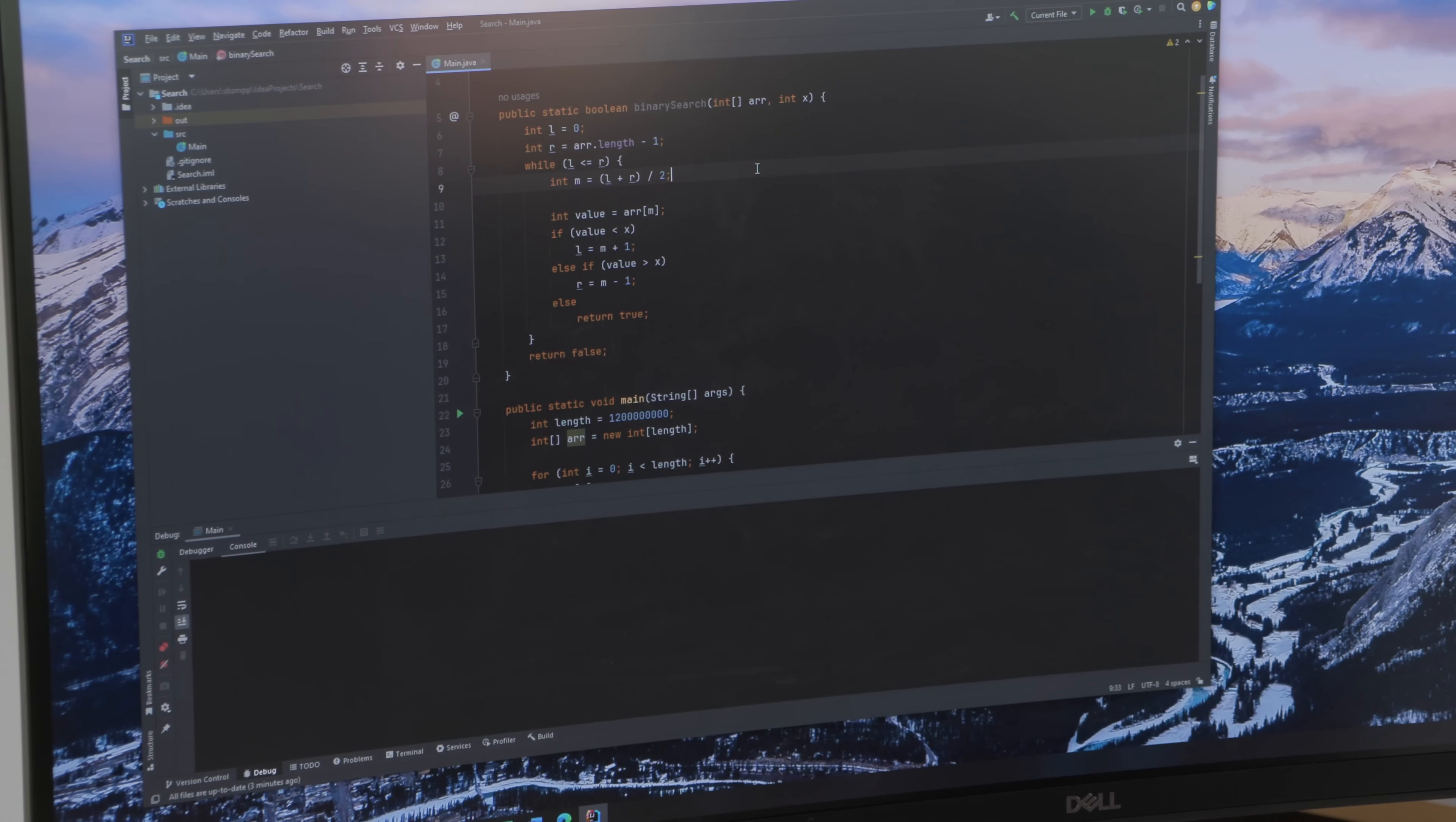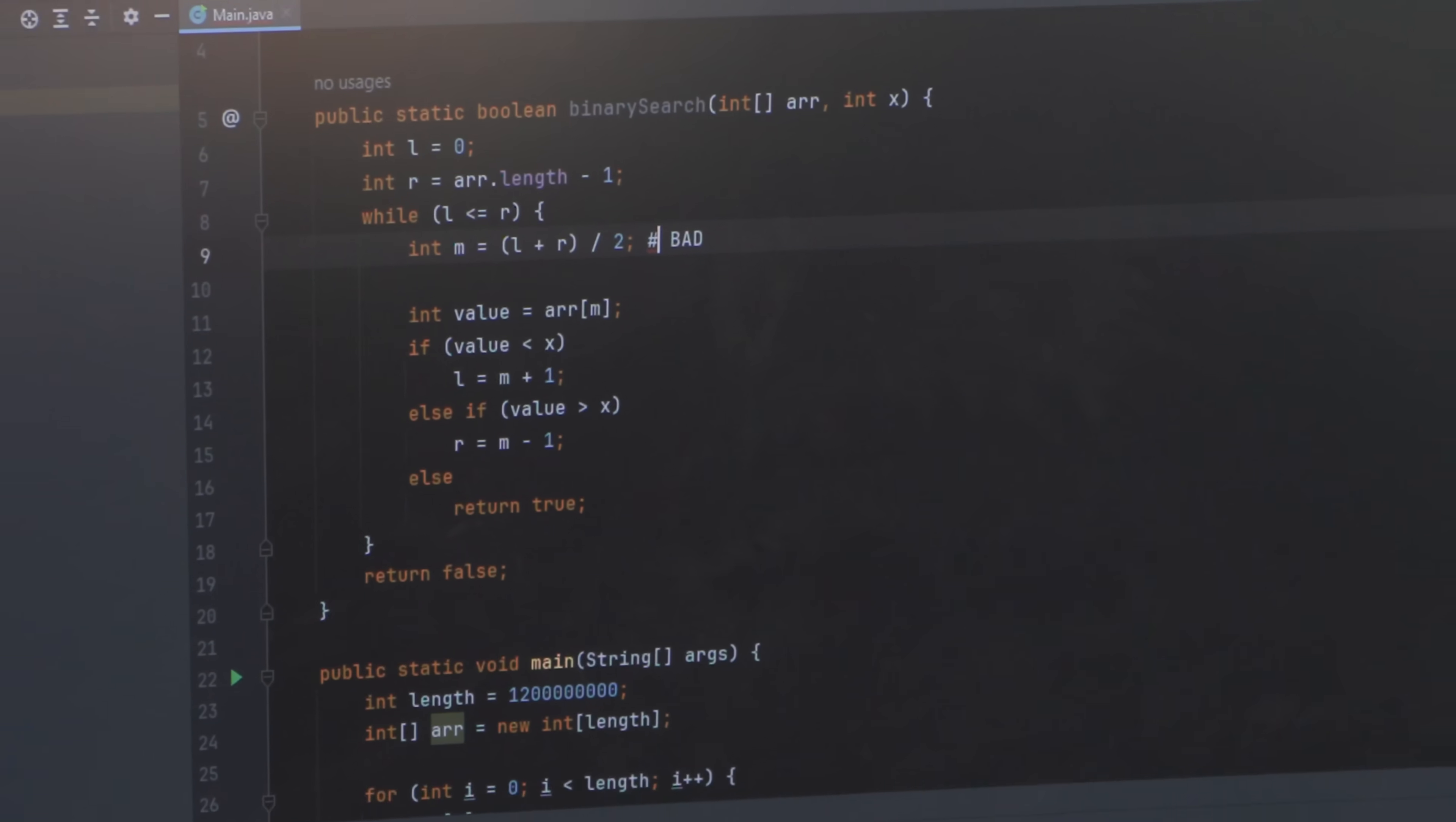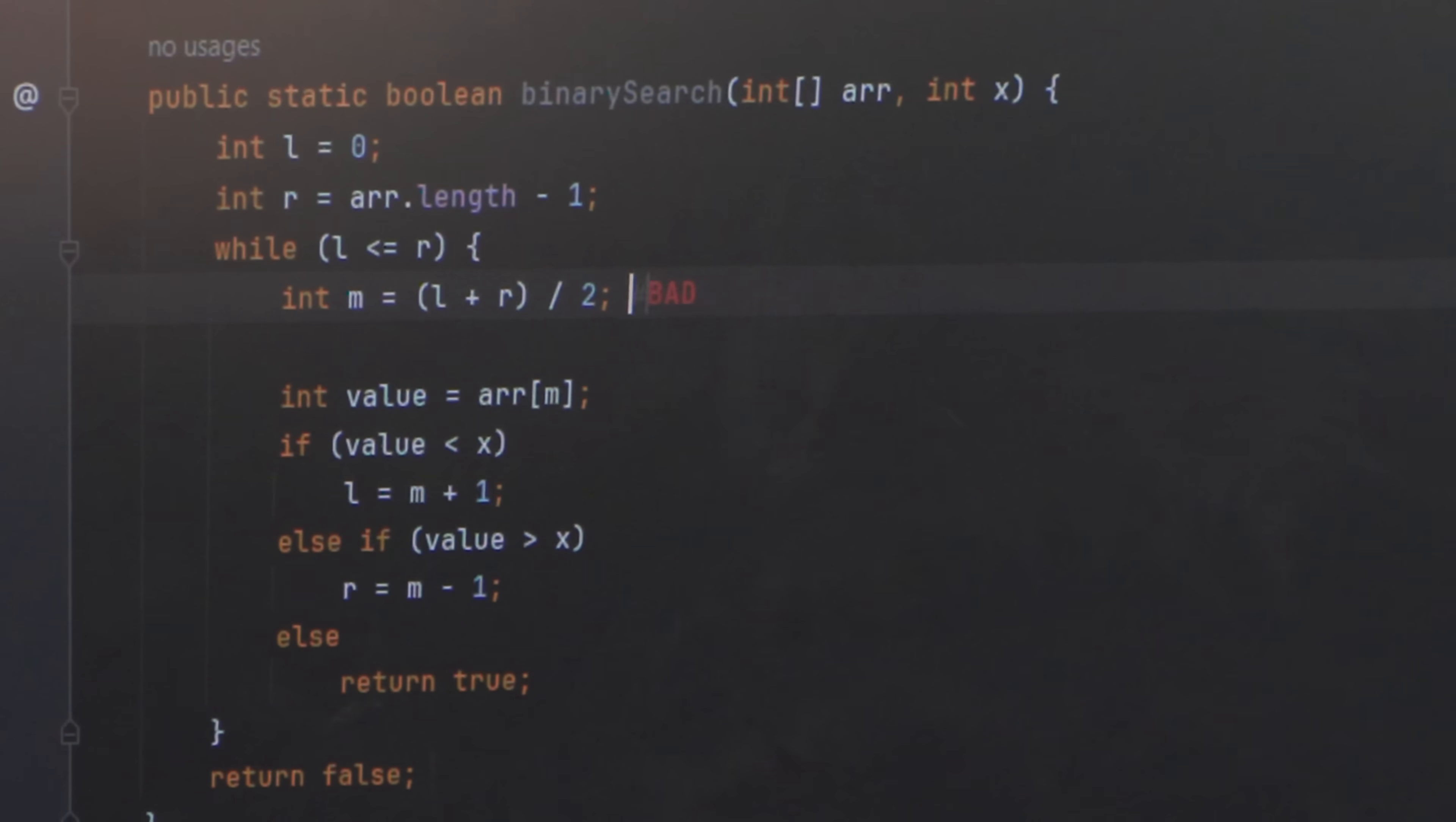Now, so I've created binary search again, so we can see the same algorithms we had before, and here is our offending line, so I'm going to say bad. That's not, that's a Python comment, not a Java comment. Excuse me. Right, so this is bad. And it's bad because, theoretically, if we have very large indices left and right, our midpoint will, our intermediate sum will overflow.